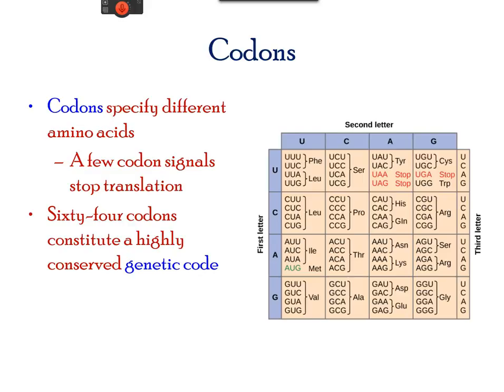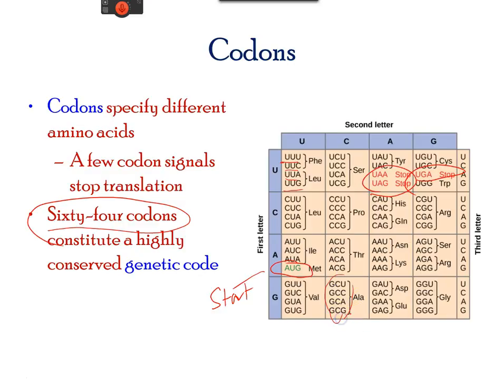If only 4 nucleotides coded for 4 amino acids, how would they code for the other 16? If 2 nucleotides formed combinations to code for amino acids, there would be only 16 possibilities — still not enough. As there are 64 codons possible with the combination of 3-nucleotide sequences, the genetic code is composed of 3 nucleotides. There is only one start codon, AUG, and 3 stop codons. Some amino acids have 4 different codons that code for them; others may have 2. The 64 codons constitute all genetic variation found in all living cells.